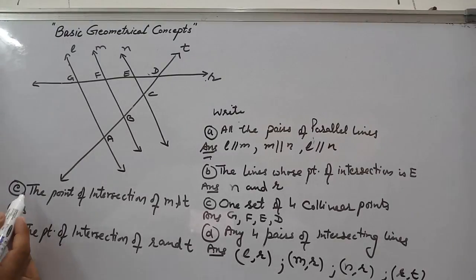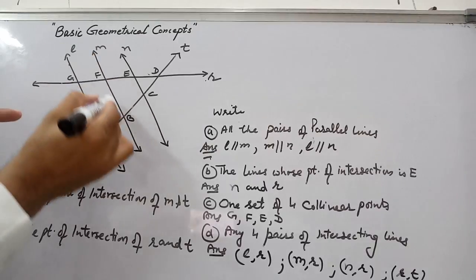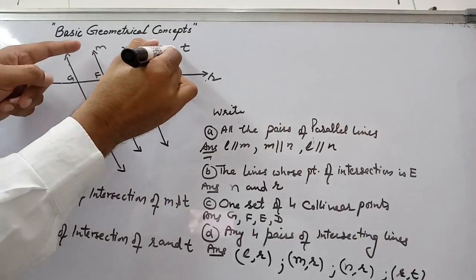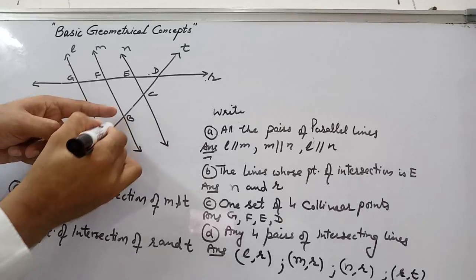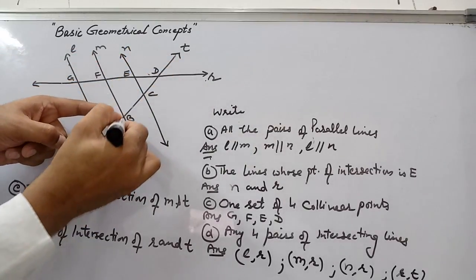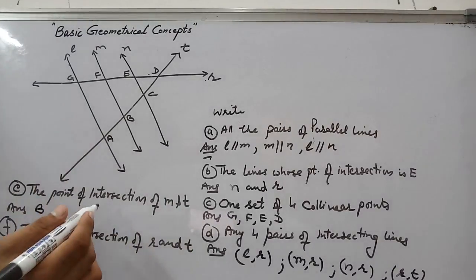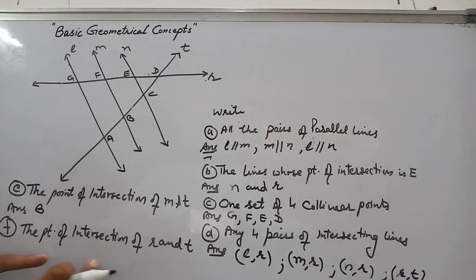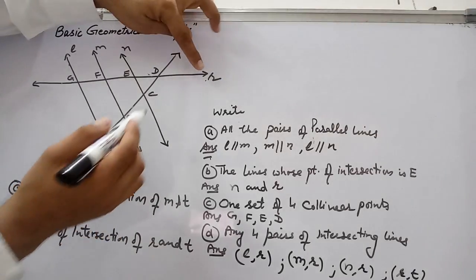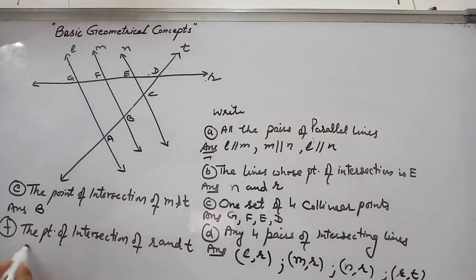Next question: find the point of intersection of M and T. M line and T line are cutting at point B, so B is the point where these two lines intersect. Next: the point of intersection of R and T. R and T are cutting at point D, so the answer is D.